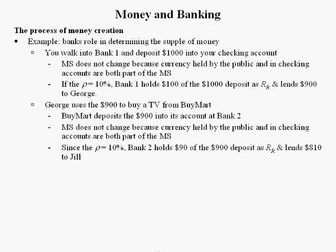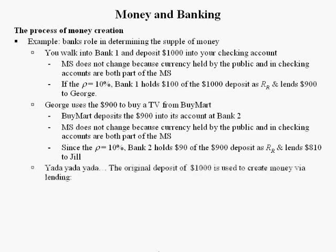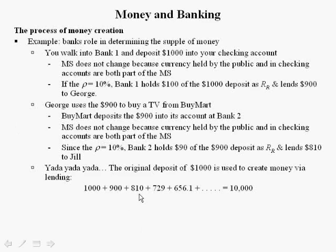So maybe Bank 2 lends $810 to Jill, who buys a TV for $810 from BuyMart. BuyMart then deposits $810 into its account. Of that $810, the bank has to hold $81 in reserves but then has $729 to lend out. Suppose the bank lends $729 to Henrietta, who buys a TV from BuyMart for $729. BuyMart deposits $729 into its checking account at Bank 2, and the process keeps going on ad infinitum.